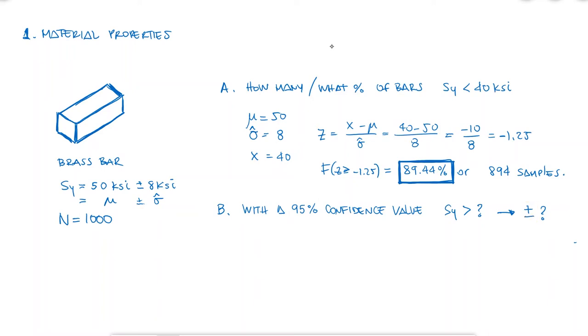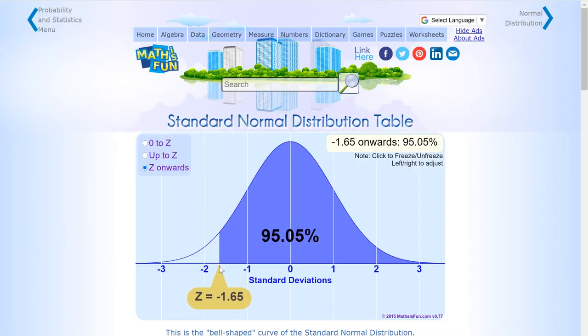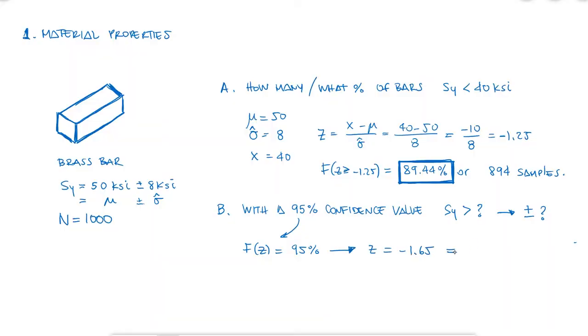But if I set a confidence interval like 90%, 95%, 99%, I can find a Z value whose probability would reach that confidence interval. And with that Z value, I can solve for the yield strength. Knowing that at least 95% of my samples will have a yield strength that is greater than 36.8 KSI,